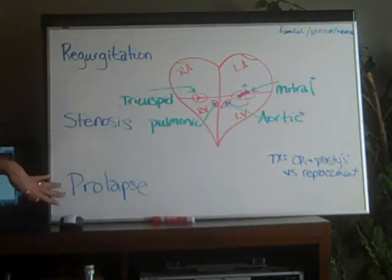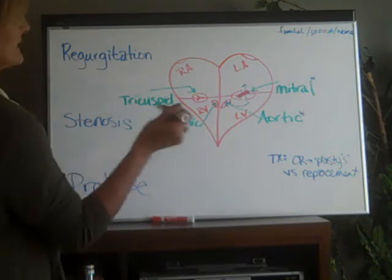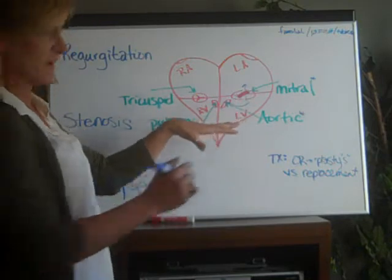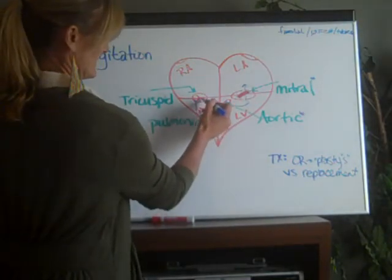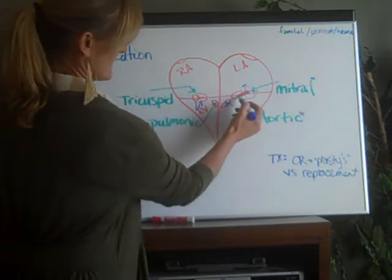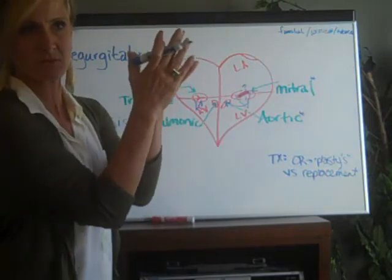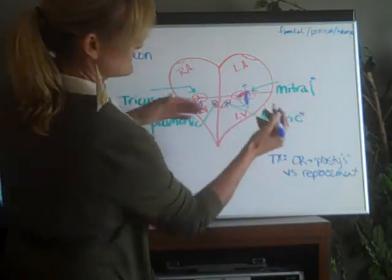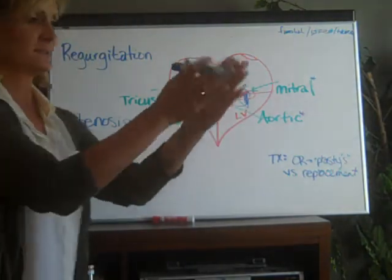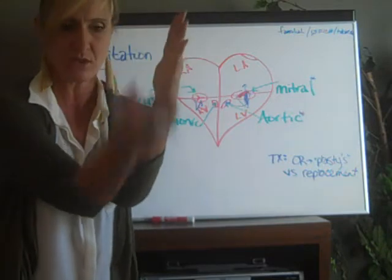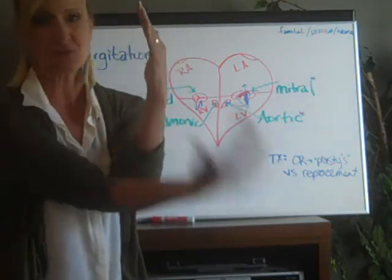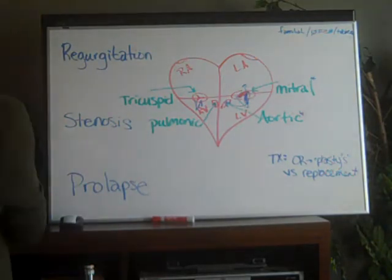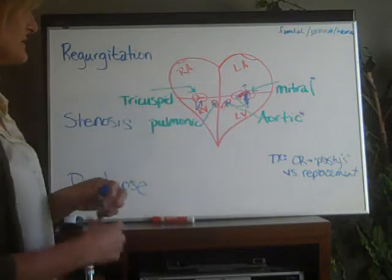The third problem is prolapse. All of these valves have tendon-like structures on them that help keep them in place and help them contract and open. Sometimes part of this can prolapse — one of the flaps kind of falls down. So instead of opening and closing like it's supposed to, one of the flaps has fallen — that's called a prolapsed valve.